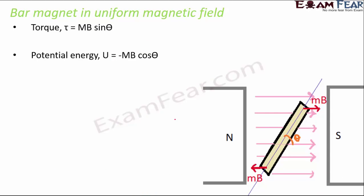When a bar magnet is placed in a uniform magnetic field, it experiences a torque — a rotational force which makes the bar magnet rotate. As visible in the picture, the bar magnet rotates because it experiences forces in opposing directions and the net effect is rotation. To calculate this torque: tau is equal to M B sin theta, or written as the cross product of M and B, where M is the magnetic dipole moment and B is the magnetic field.